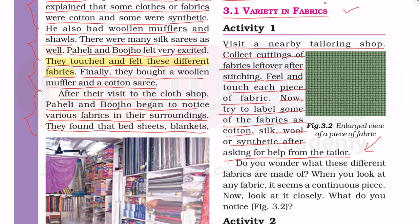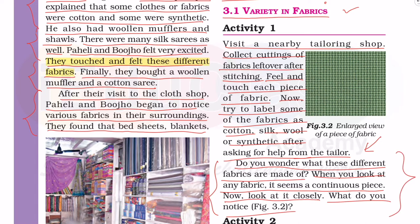Tailor की दुकान पे जाओ, बचे हुए जो कपड़े के cloth होते हैं जो नीचे पड़े हुए हैं, उनको बोलो - अंकल आपके पास different kinds के जितनी भी clothes हैं वो मुझे दे दो, मुझे activity करनी है। फिर उसको feel करो, touch करो, identify करो, या तो उनसे पूछो - अंकल यह कौन से cloth है - और इसका एक note बनाओ। When you look at any fabric, it seems a continuous piece. Look at it closely - what do you notice?